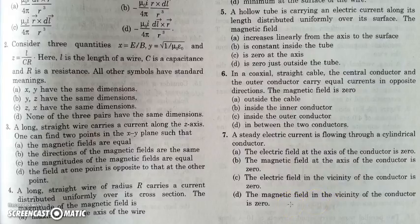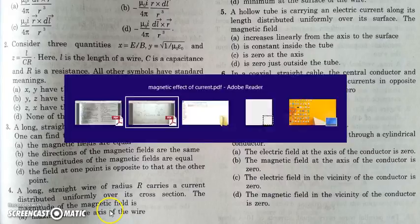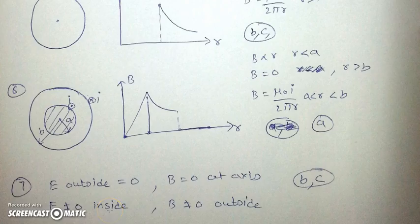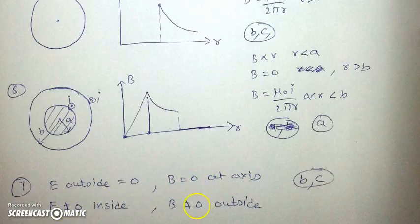As we move outside the wire, the magnetic field is present. So only two options are correct: the magnetic field is zero at the axis, and the electric field in the vicinity outside is zero. E outside is zero, B is zero at the axis. E is not zero inside the wire, and B is not zero outside in the vicinity of the wire.